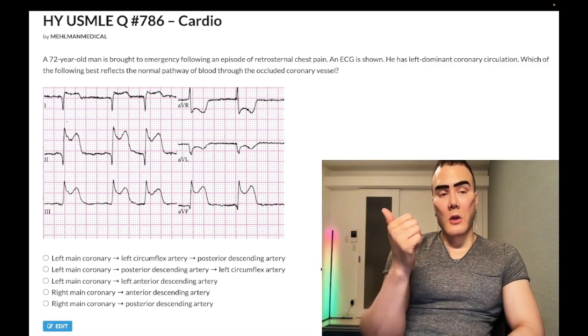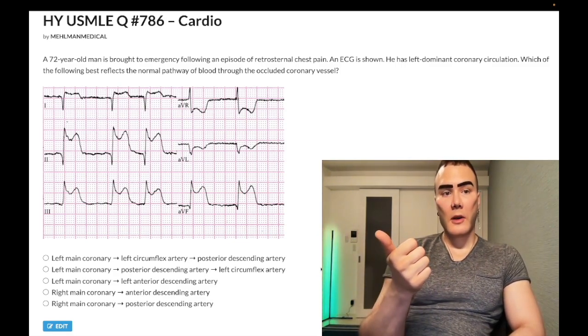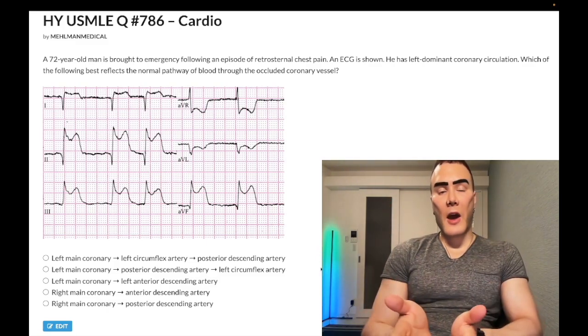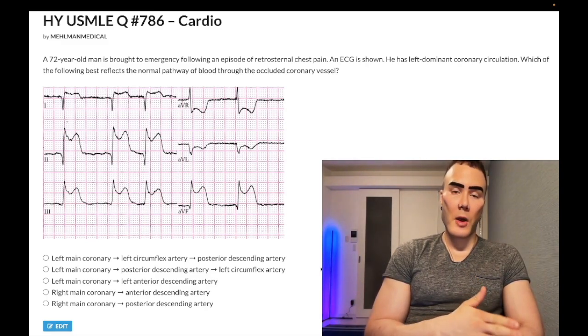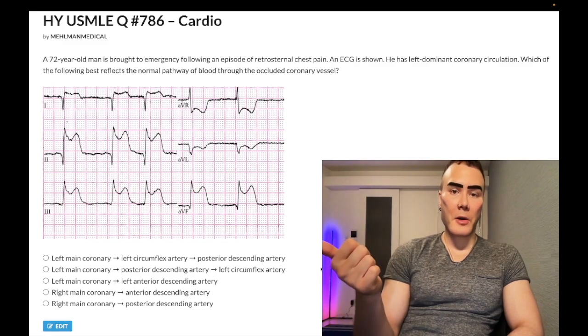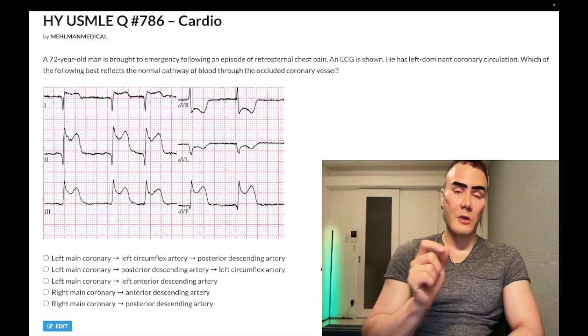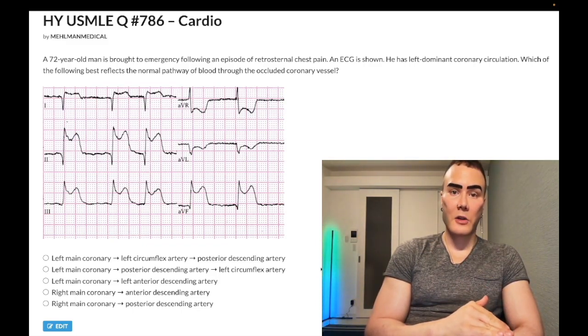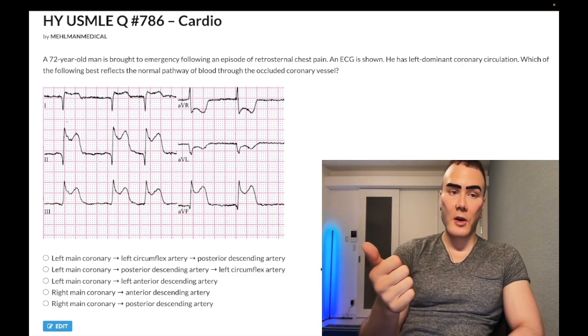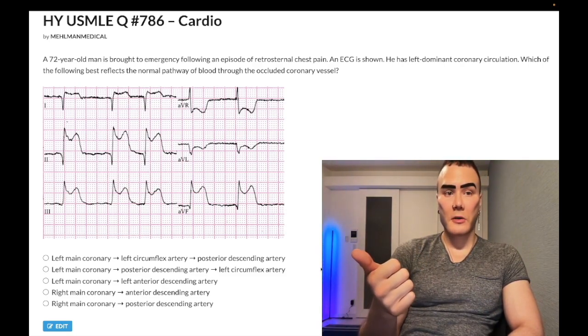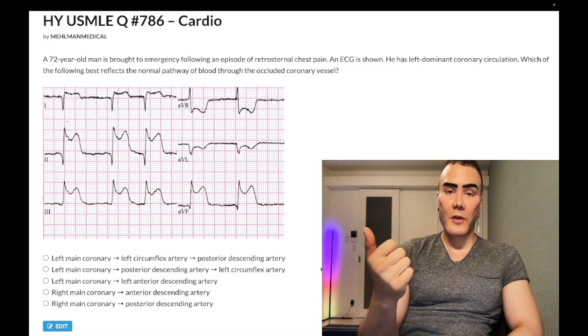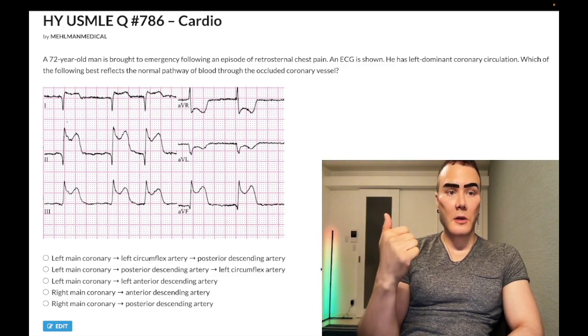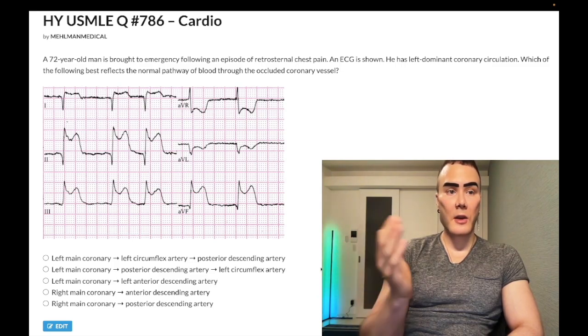So your take home for this question is the diaphragmatic surface of the heart, the inferior heart, is supplied by the posterior descending artery. Most of the time it comes off the right main coronary. But if you're left dominant circulation, it's going to come off the left main coronary, where we have left main coronary goes to left circumflex goes to posterior descending artery. That's the diaphragmatic surface of the heart. And that's going to be ST elevations in 2, 3 AVF. If we have an anterior infarct, that's going to be left main coronary goes to anterior descending artery. And that's going to be ST elevations in V1 through V4.